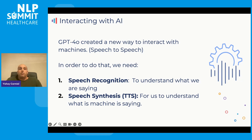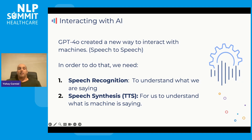There are two types of technologies we need to understand when interacting with AI in a voice-based interaction. The first is speech recognition — if I'm speaking something, the machine needs to understand what I'm saying and converts my speech into text. This text is then injected into an LLM that knows how to interpret it. The outcome comes through a technology called speech synthesis, and that is what we hear from the machine or AI.